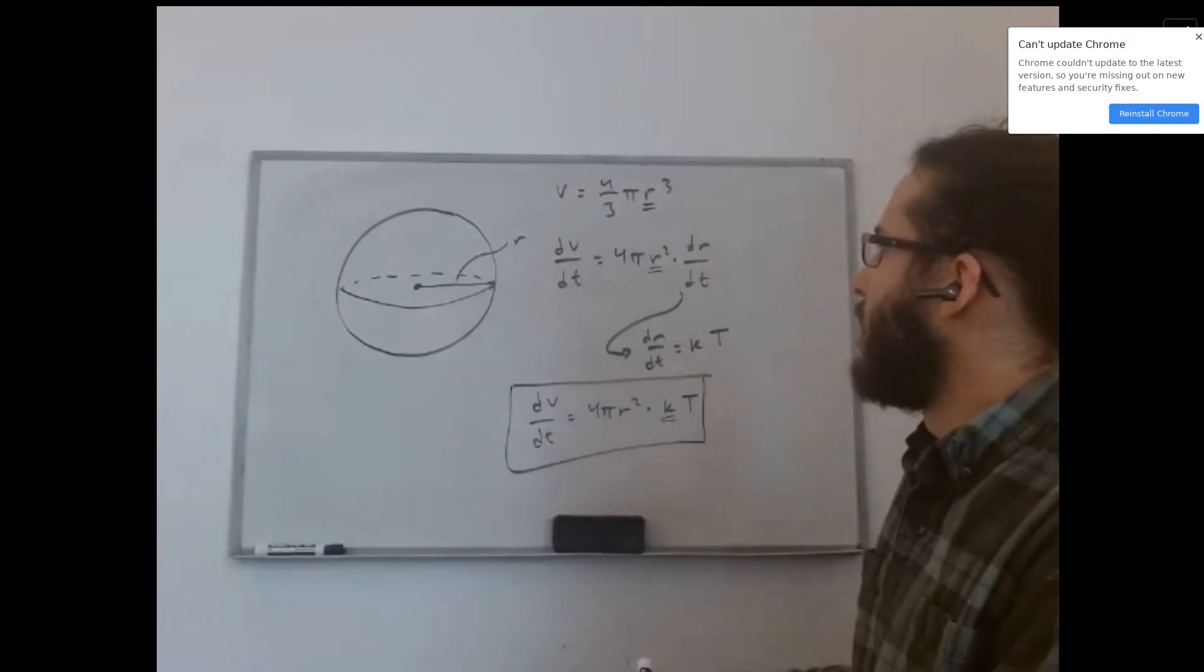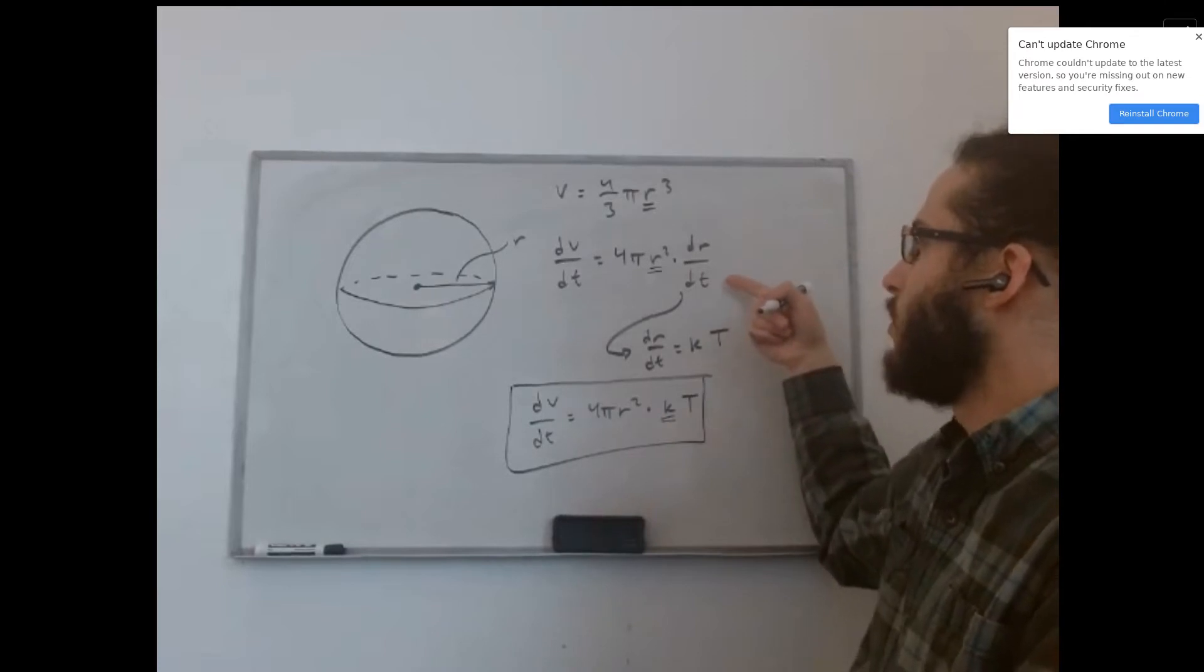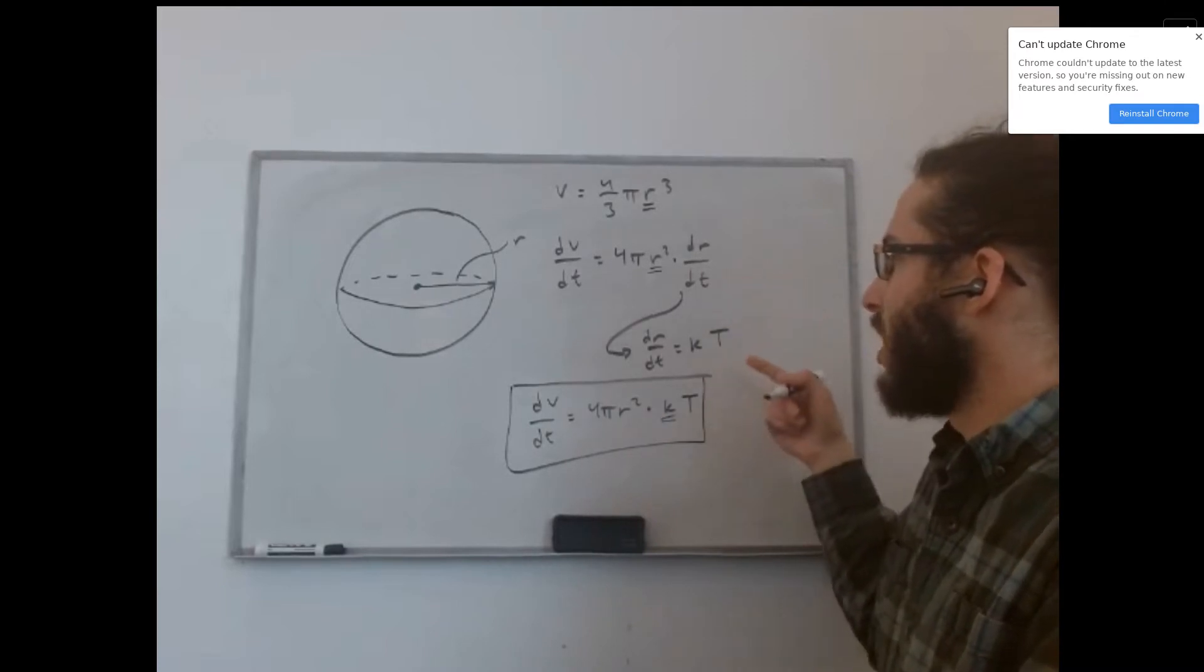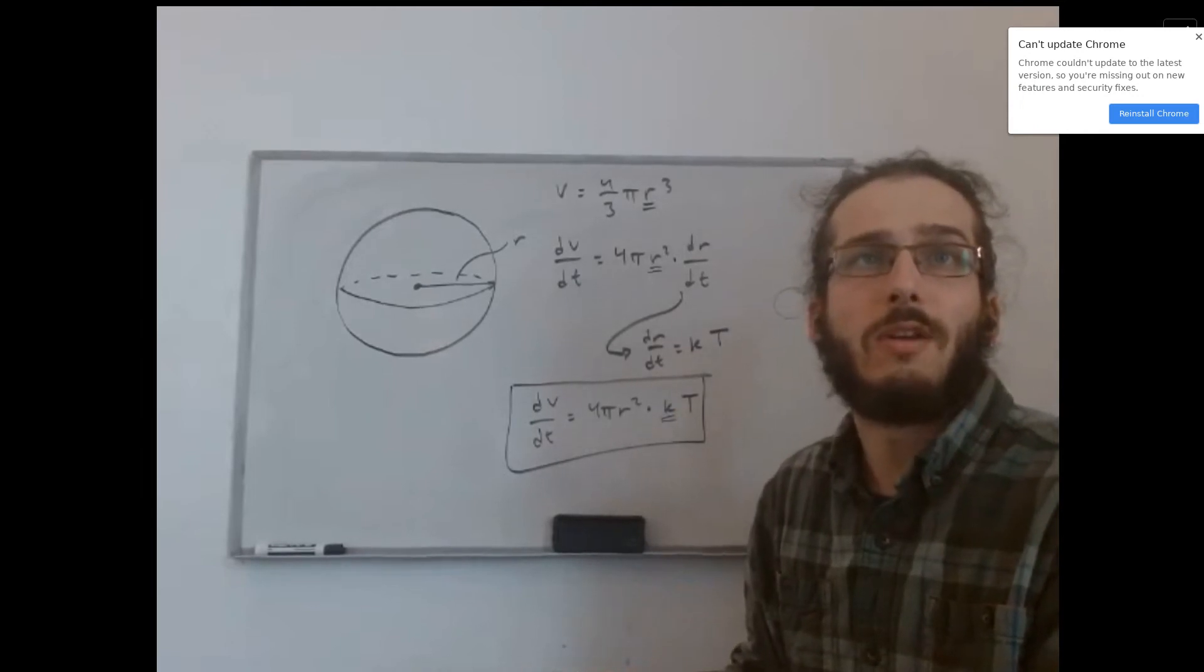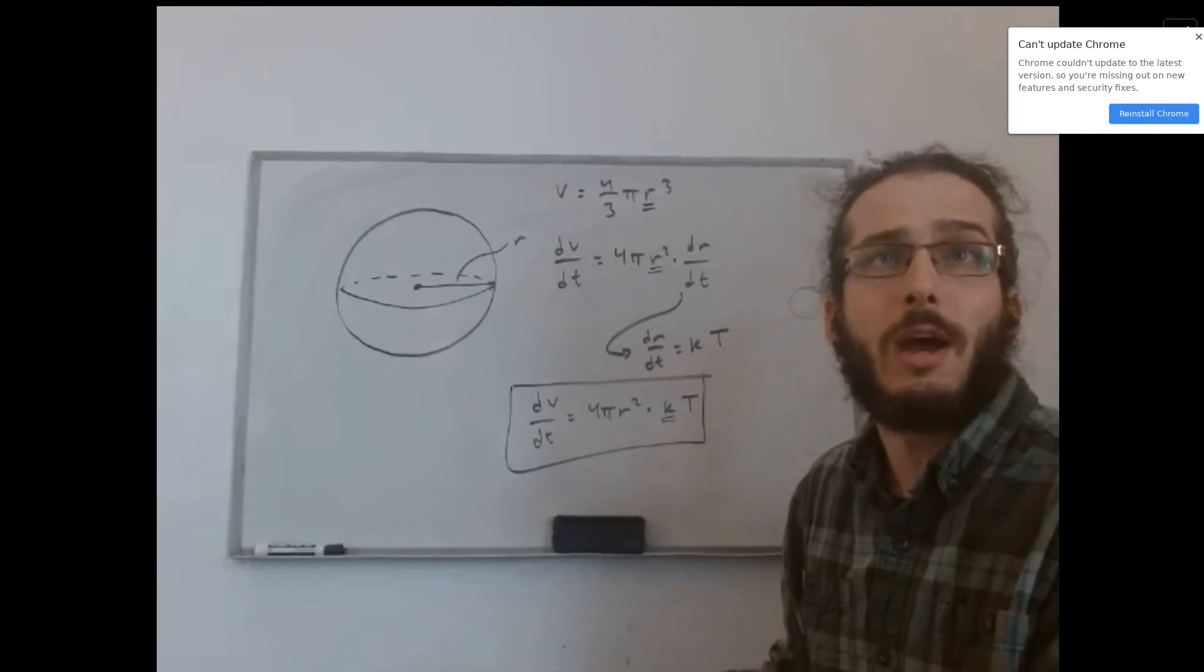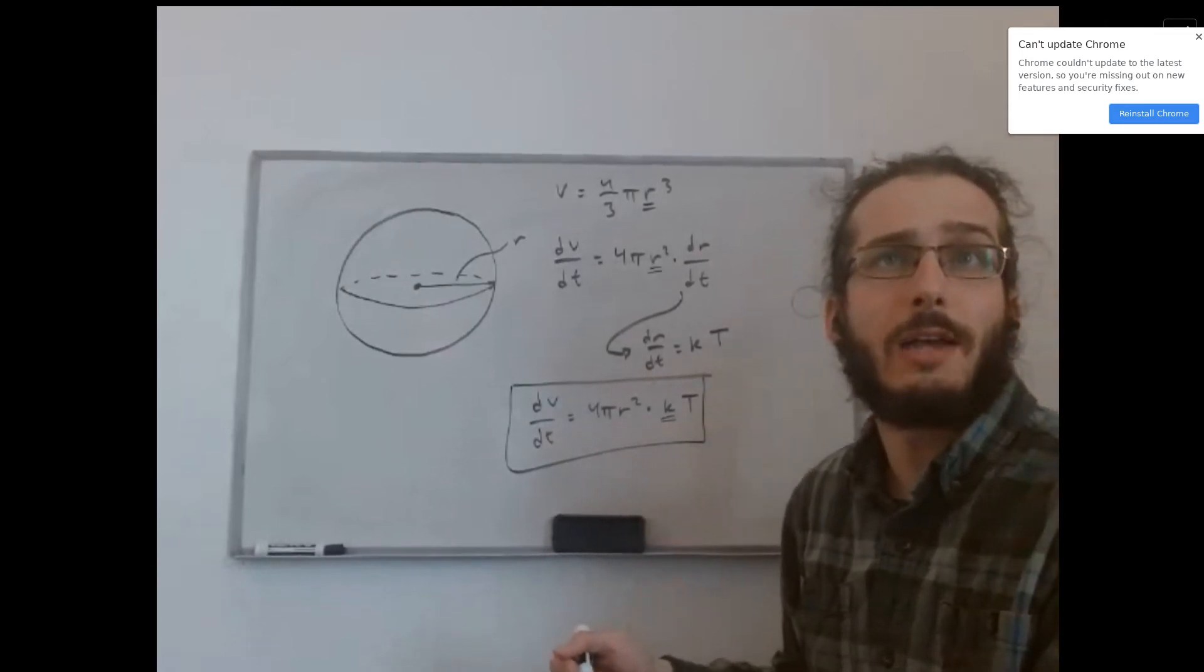So, the only question that we have left now is to figure out what is this dr dt, and how can we use this term to incorporate the temperature of the glass into our expression for the rate of change of the volume over time, since we're asked to write that expression in terms of both the radius and the temperature of the glass.